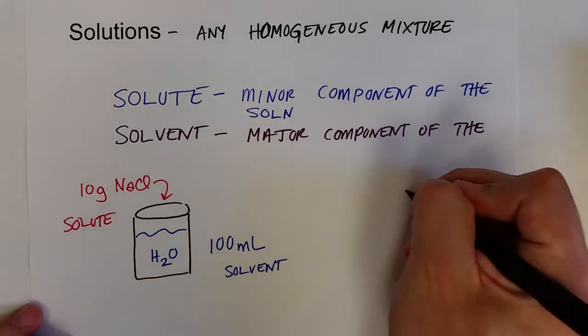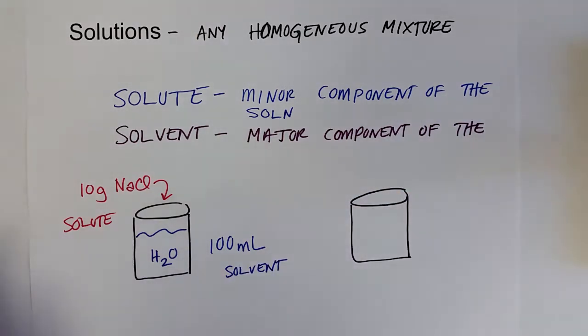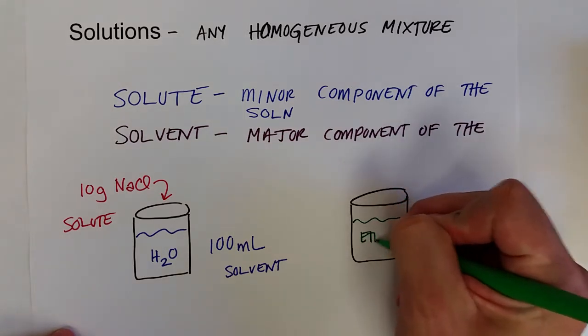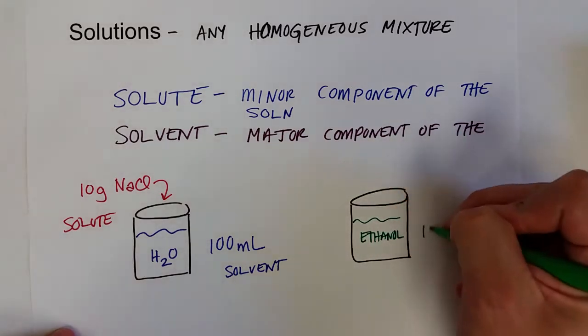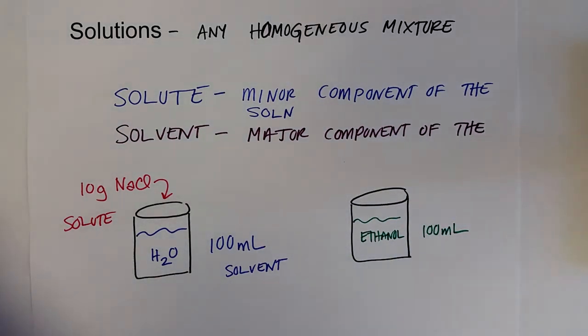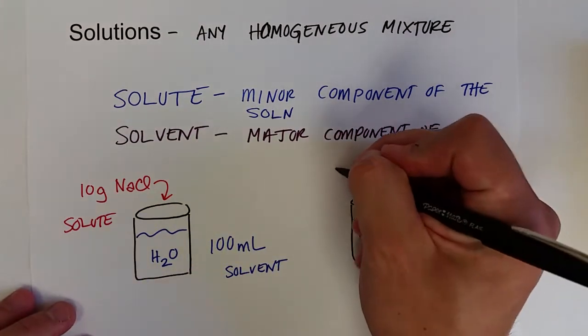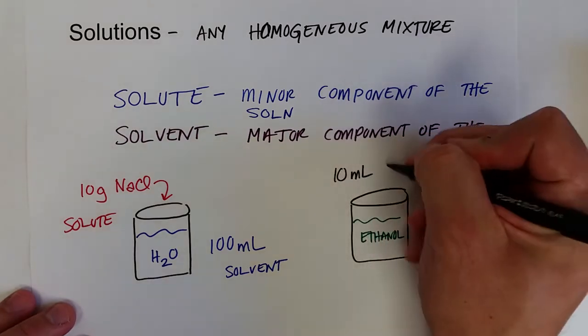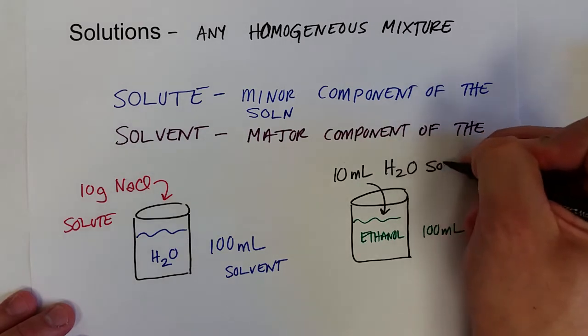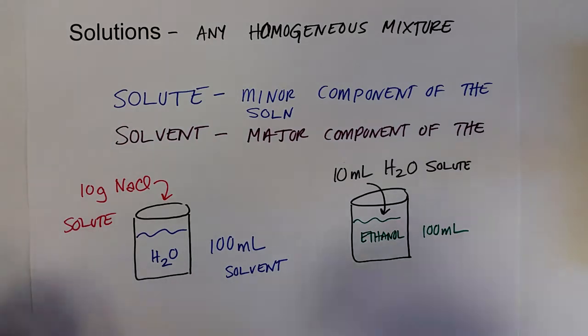If, on the other hand, say we have a container of ethanol, and we've got a hundred milliliters of it, and to that ethanol we add ten milliliters of water. In this case, water is now the solute, because it is the minor component of the solution, and ethanol is the solvent.